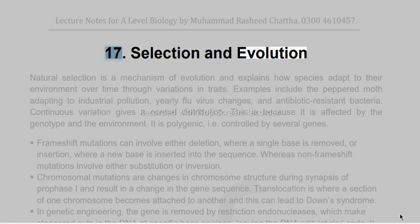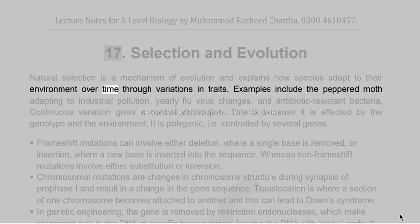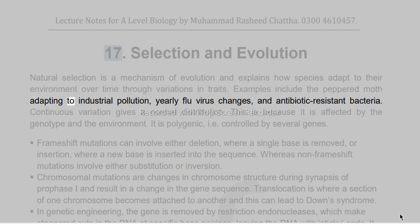Natural selection is a mechanism of evolution and explains how species adapt to their environment over time through variations in traits. Examples include the peppered moth adapting to industrial pollution, yearly flu virus changes, and antibiotic-resistant bacteria.